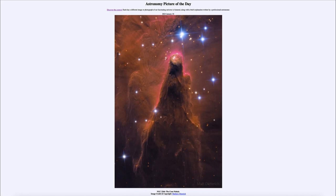That is apod.nasa.gov/apod, and today's picture for January 10th of 2023 is titled NGC 2264, the Cone Nebula. This is an example of a star formation region, and what is known as the Cone Nebula for its distinct shape coming up towards a point in the shape of a cone.